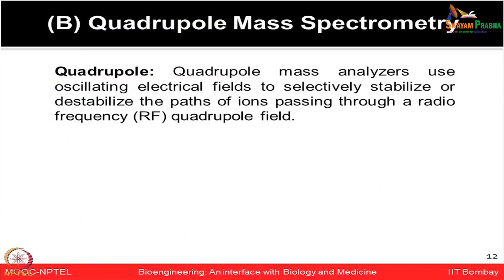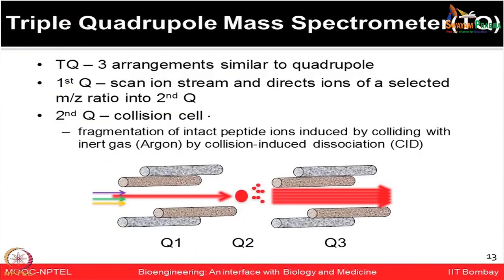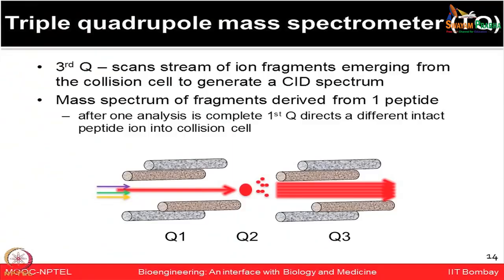Quadrupole-based mass analyzers use oscillating electric fields to selectively stabilize or destabilize the path of ions passing through a radio frequency quadrupole field. In a triple quadrupole configuration, the first quadrupole scans the ion stream and directs ions of a selected mass-to-charge ratio; those selected ions are fragmented in a collision cell using collision-induced dissociation with inert gases like argon; then the third quadrupole scans the resulting ion fragments, generating a CID spectrum.